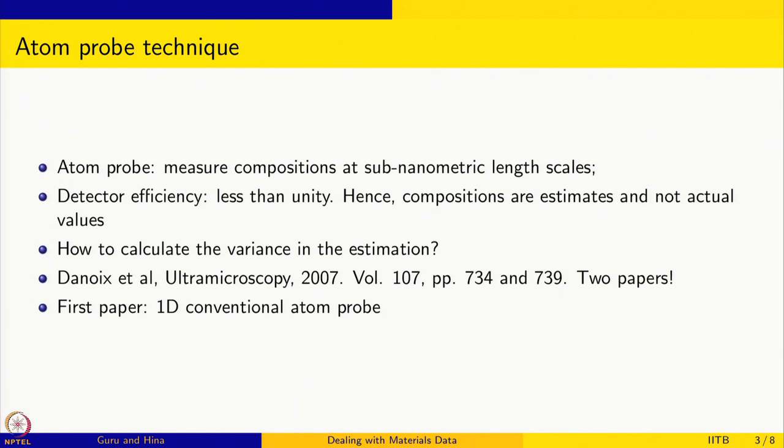We are going to look at one more thing we discussed in descriptive statistics, which is error analysis. It is very difficult to do any experiment without errors, so it is a given that there will be errors and standard deviations. As long as we have control over the standard deviation, we are okay. In this context, we want to calculate the variance or the standard deviation in the estimation of the composition from the atom probe experiment.